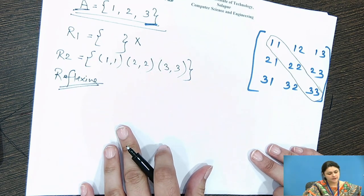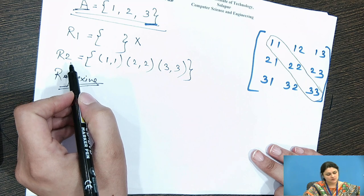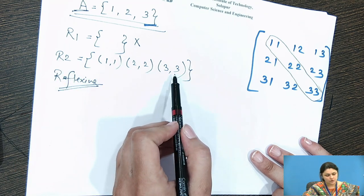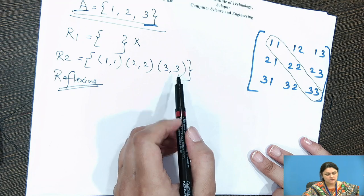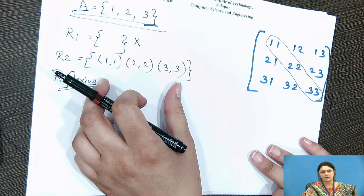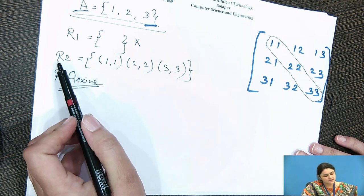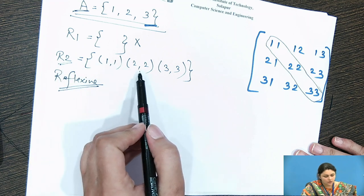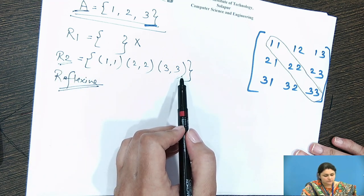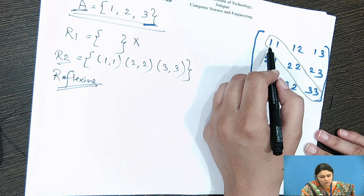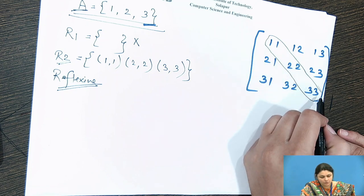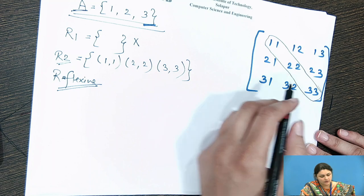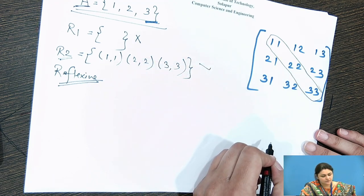Now let us consider the second example. For R2, we have ordered pairs (1,1), (2,2), (3,3). Checking reflexivity: we have (1,1), (2,2), (3,3) — yes, this is reflexive.